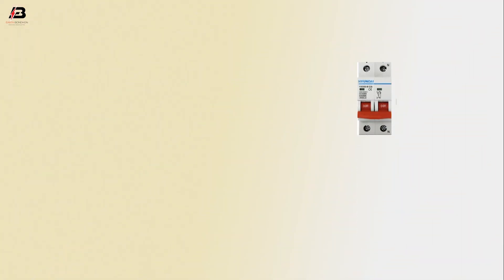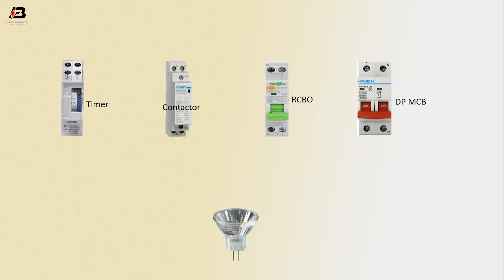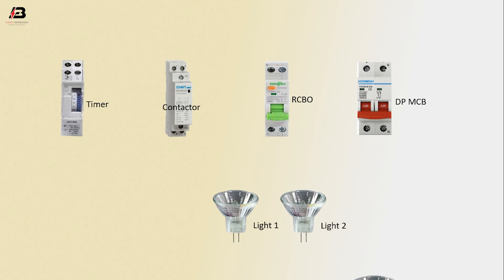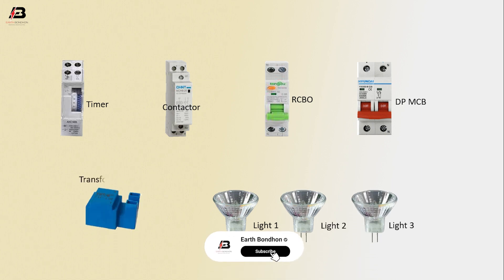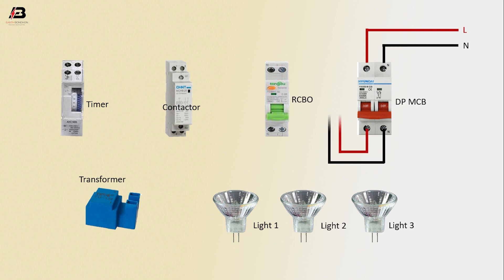So viewers, let's start. Components: DP MCB circuit breaker, RCBO circuit breaker, contactor, timer, light one, light two, light three, transformer. Phase connection input to DP MCB, neutral connection input to DP MCB. Output connection from DP MCB to connect RCBO.